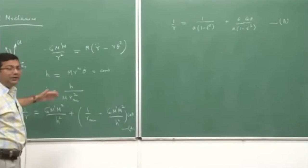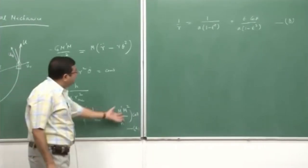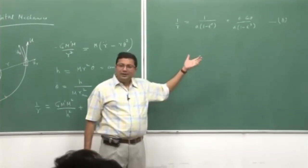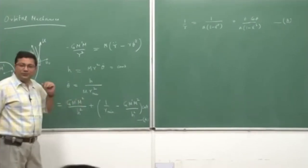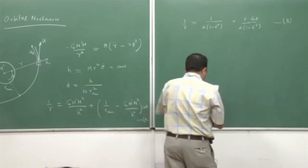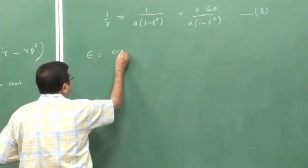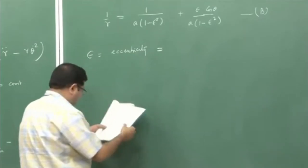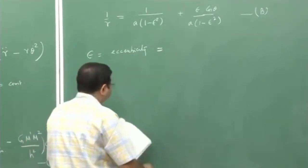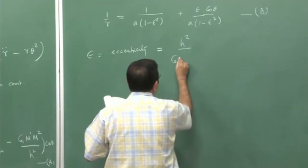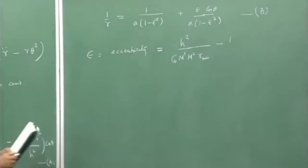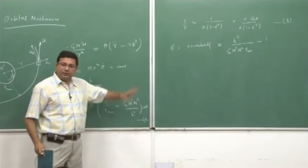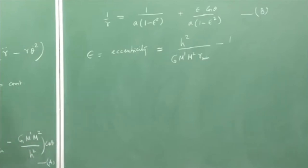We can equate the terms appearing in both equations. Looking at this, epsilon — the eccentricity — is equal to h²/(G·m_dash·m²·r_min) minus 1. We get this by equating the terms in equations A and B. But 'a' is also present, so I need an expression for 'a' as well. For that, let us go back to the basic conic sections.